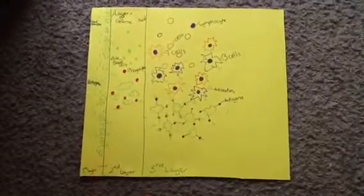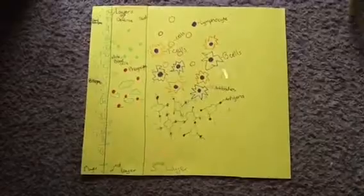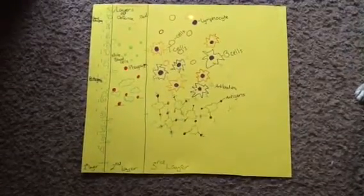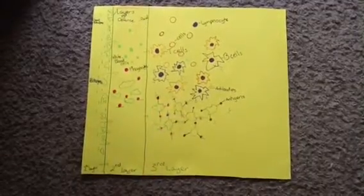Some pathogens are strong enough to break through to the third line of defense, the immune response, in which the immune system's many cells react to the many different pathogens. Each cell has its own job.